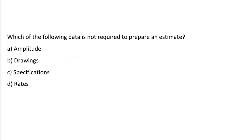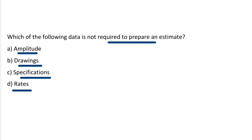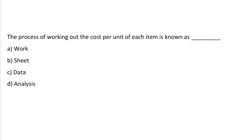Next question: which of the following data is not required to prepare the estimate? Option A: Amplitude. Option B: Drawing. Option C: Specification. Option D: Rates. The correct answer is option A, Amplitude — because drawing, specification, and rates are most important to prepare the estimate.